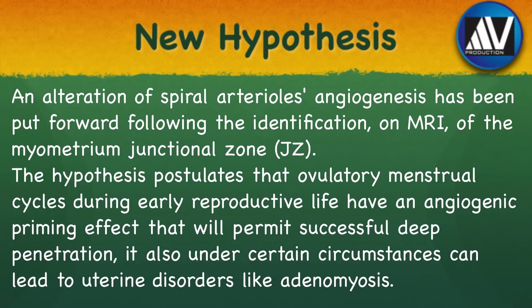Recently, a new hypothesis that links both endometriosis and adenomyosis to the same predisposing factor has been proposed. An alteration of the spiral arterioles' angiogenesis has been put forward following the identification on MRI of the myometrial junctional zone. The hypothesis postulates that ovulatory menstrual cycles during early reproductive life have an angiogenic priming effect that permits successful deep penetration, and under certain circumstances can lead to uterine disorders like adenomyosis. Further validation is required before this hypothesis is accepted.